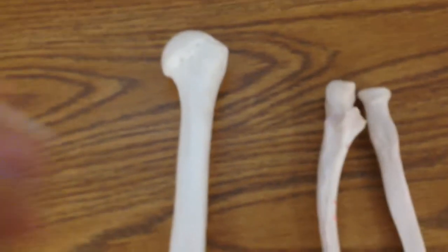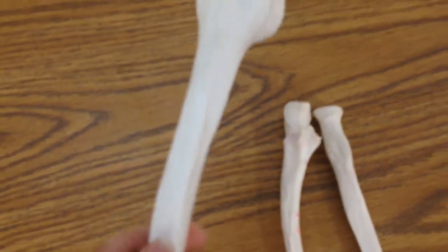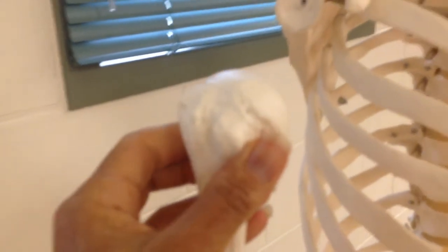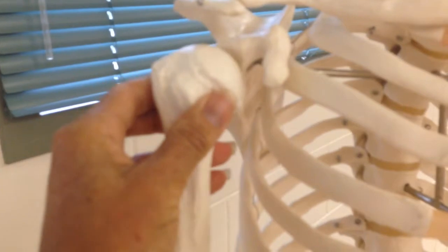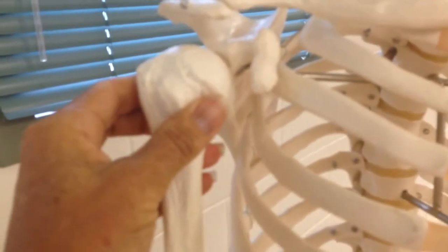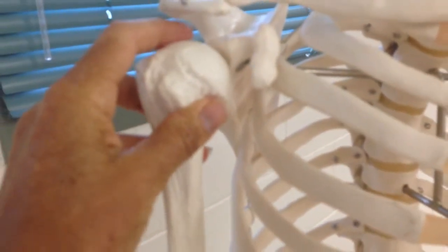Let's start with the humerus. The first thing you absolutely have to know is whether or not you have the left or the right. What I would advise is you look for the head, then put it into your own shoulder, or go to the nearest skeleton and put it in, and you'll be able to determine if you have the left or right.